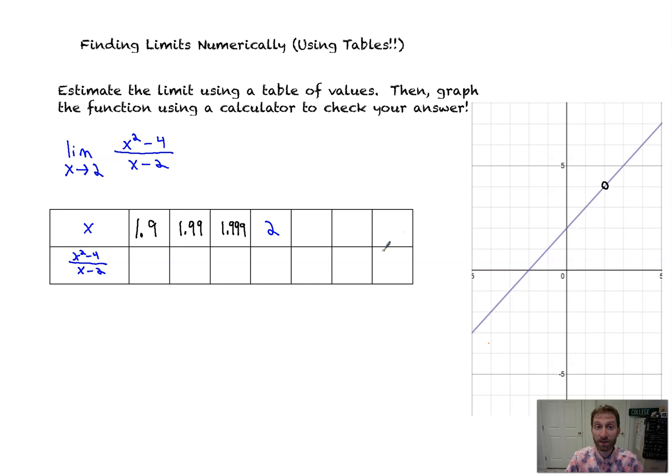Now let's go from the right-hand side. So we're moving from the right in towards the left, in this case towards 2, from the right-hand side. So that would be 2.1. A little bit closer, 2.01. A little bit closer, 2.001.